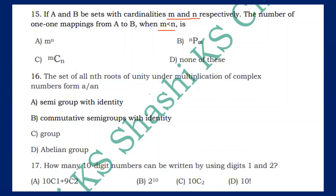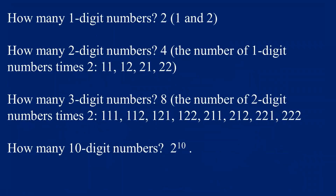The set of all Nth roots of unity under multiplication of complex numbers forms an Abelian group — that is option D and the right answer. Next: how many 10-digit numbers can be written using only the digits 1 and 2? For 1-digit numbers: 2¹; for 2-digit numbers: 2²; for 3-digit numbers: 2³. Following this pattern, for 10-digit numbers the answer is 2 to the power 10.